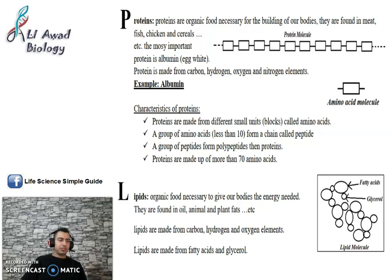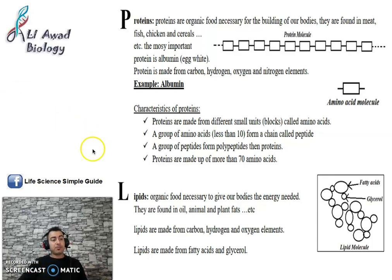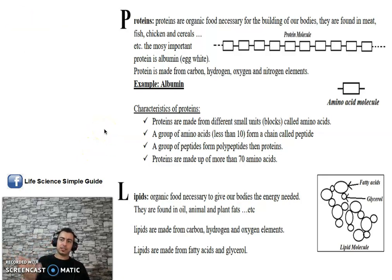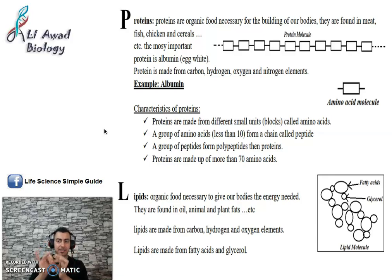Hello dear students, how are you today? We are going to continue with the types of food, chapter one, activity one: our food. In the previous video I explained the definition of organic and inorganic food, and we said that organic food is composed of three different types: carbohydrates, proteins, and lipids. In the previous video I talked about carbohydrates and proteins.